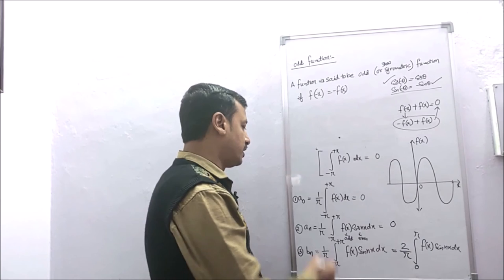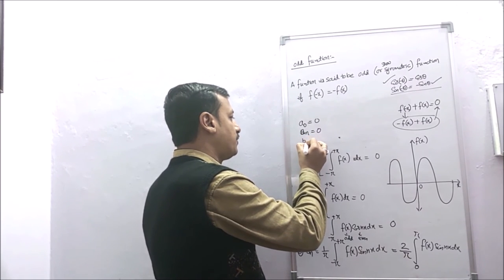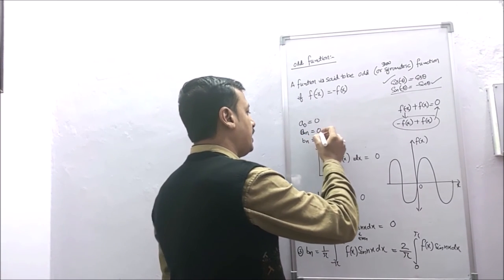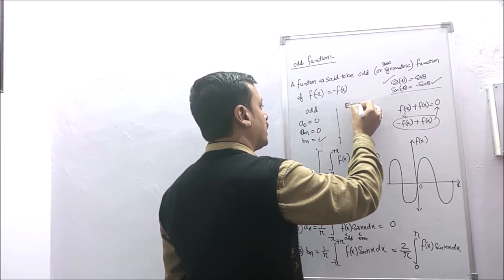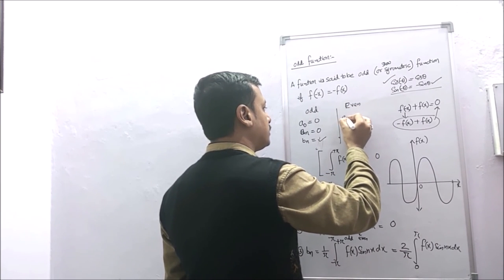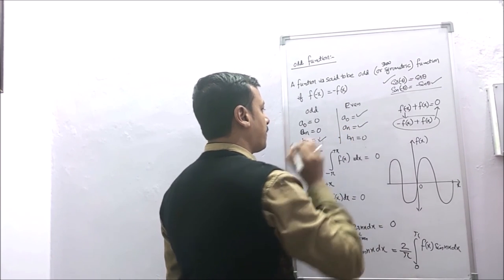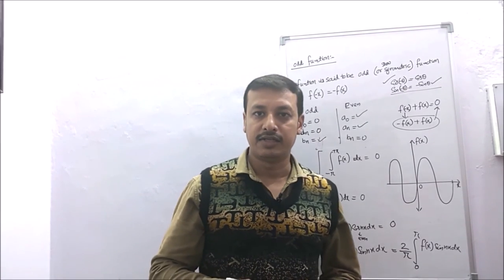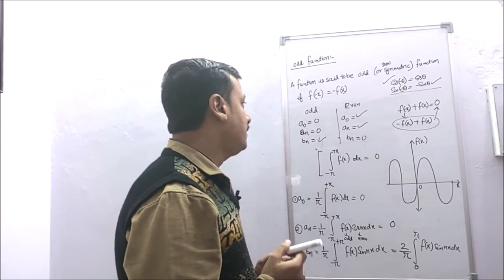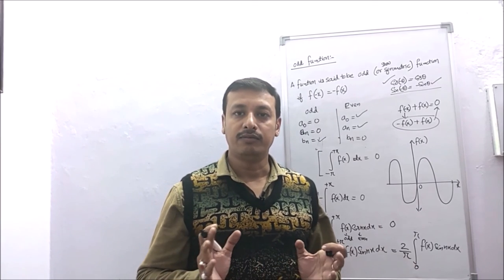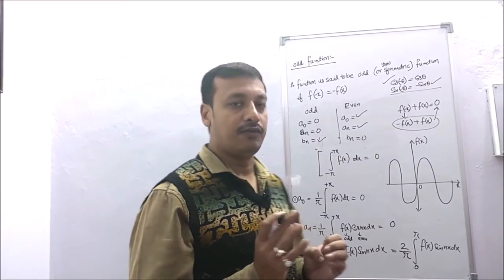In summary, for an odd function: a0 = 0, an = 0, and we only need to calculate bn. For an even function: a0 and an are present, but bn = 0. By checking whether a given function is odd or even, we can easily expand it using the Fourier series and calculate the relevant Fourier coefficients.